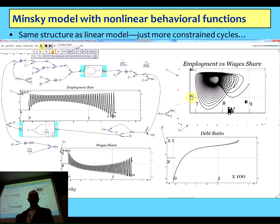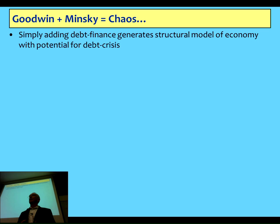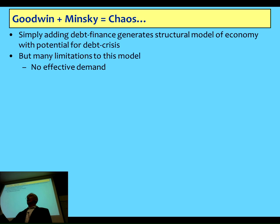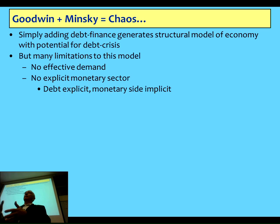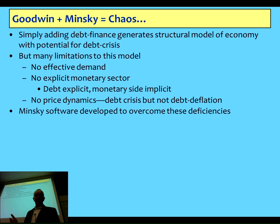That's chaos coming out of simply adding debt into the system. It's a structural thing — not imposing an assumption of a particular type of behaviour to generate the result. It's just saying capitals borrow money to invest. But there are plenty of limitations: I haven't got effective demand inside there, investment determines what consumption is as a leftover, there's no explicit monetary sector, no mechanism by which debt creates money enabling you to expand the economy, and there's no price dynamics. That's why you get these mad crazy cycles. We did see a collapse in 2008, so something is missing — largely price dynamics. I've developed Minsky to get past those problems.